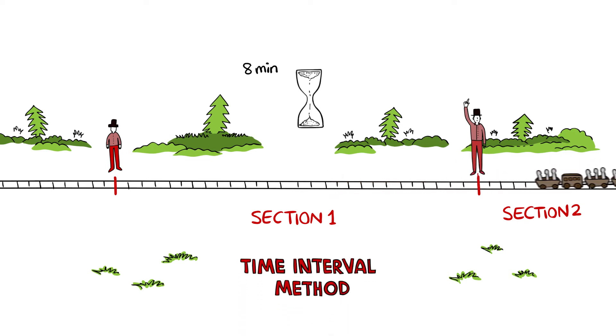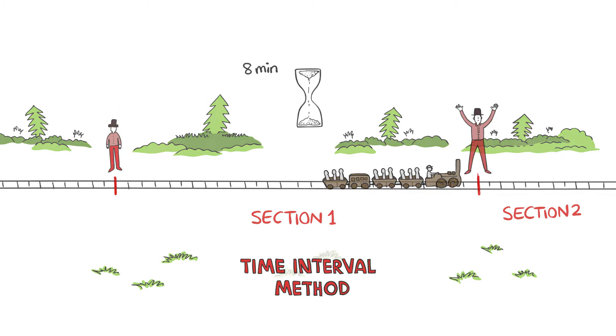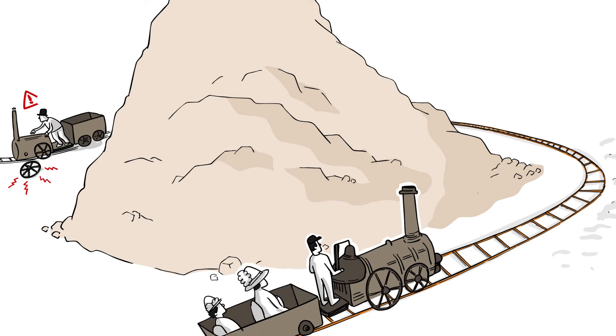The time interval method served its purpose, but this approach had its drawback since it could not take into account unexpected mechanical failures or any other emergencies. Think of this scenario. The first train enters a section with a blind curve and experiences a mechanical failure causing the train to stop.